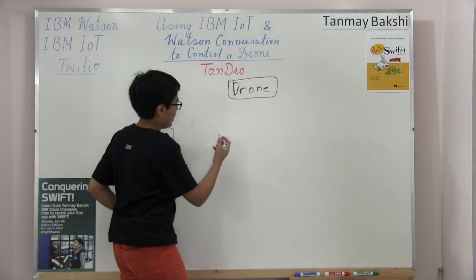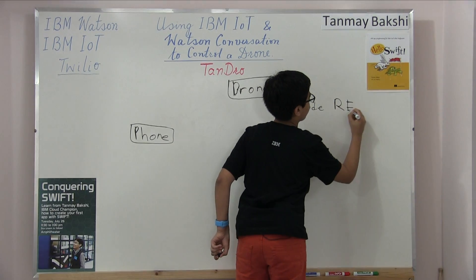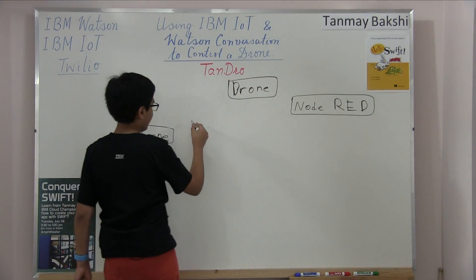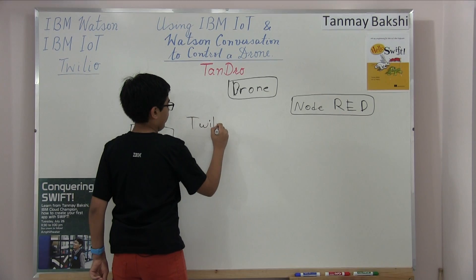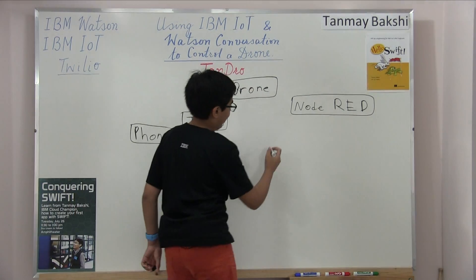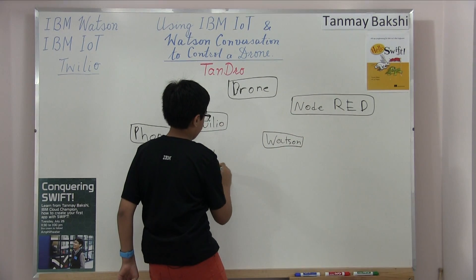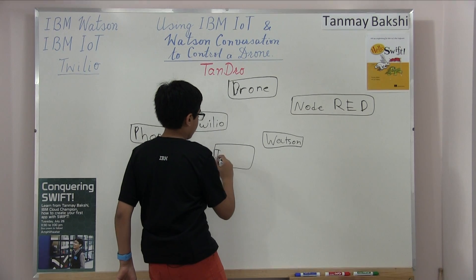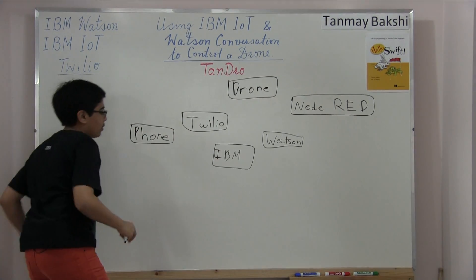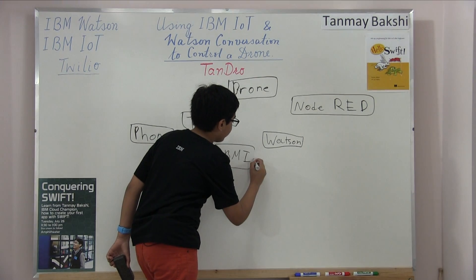The building blocks we have are Node Red, Twilio — because a phone's best friend in terms of API is Twilio — Watson Conversation, and of course IBM IoT. So we have quite a few building blocks here.